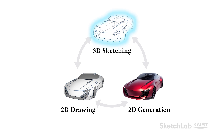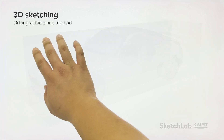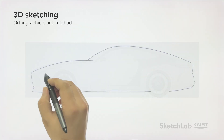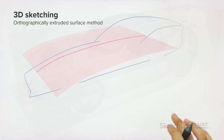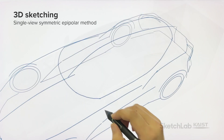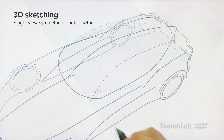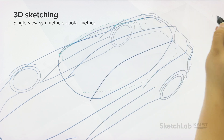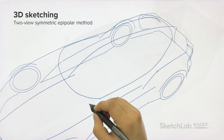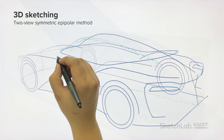First, designers can quickly sketch essential 3D curves by using four 3D sketching methods. They can draw a planar curve on an orthographic grid plane or draw a spatial curve on an orthographically extruded surface. They can also create spatial curves by drawing a pair of symmetric curves from the same viewpoint or by drawing the same curve again from another viewpoint.